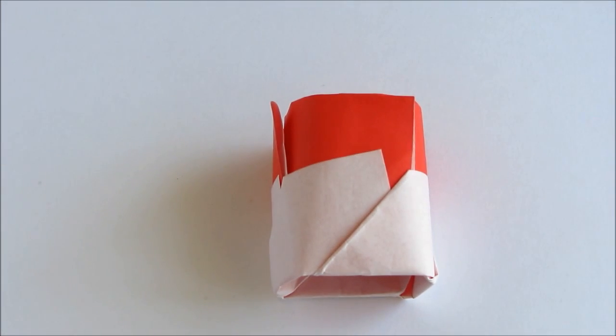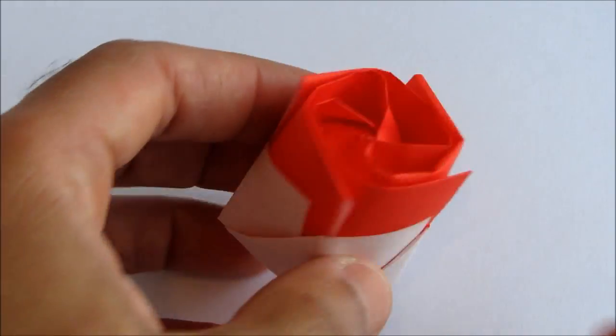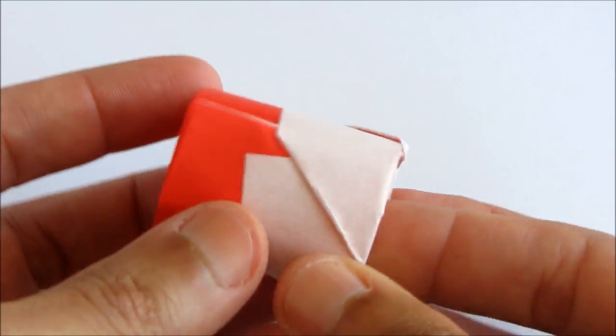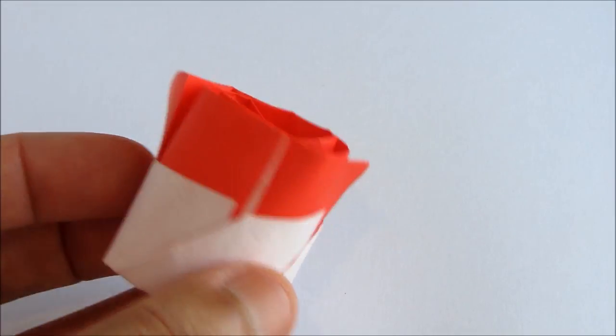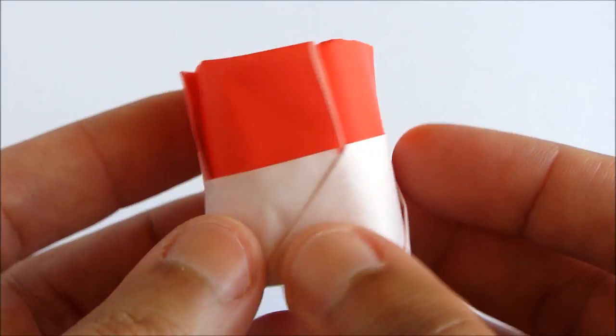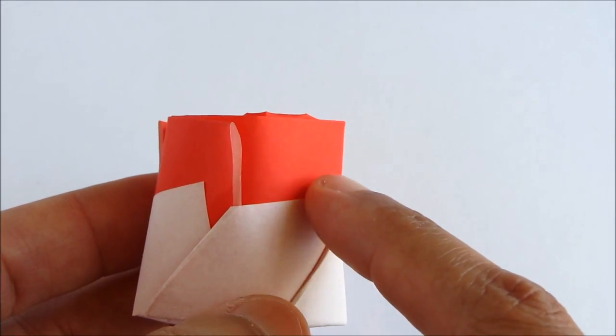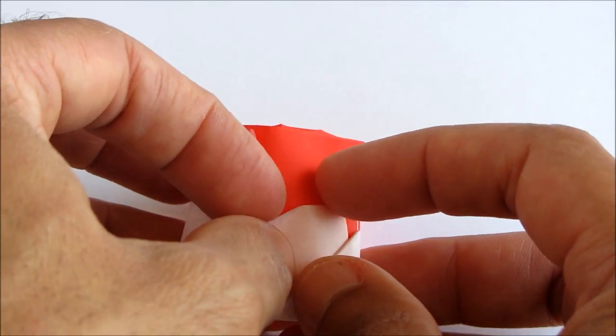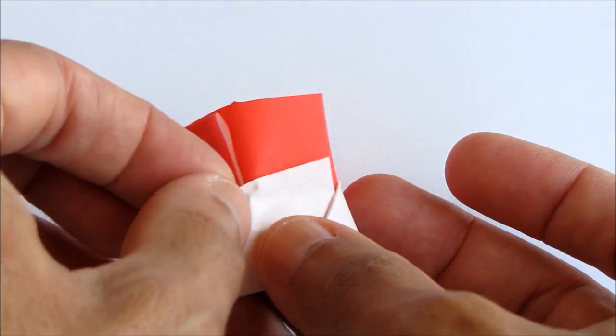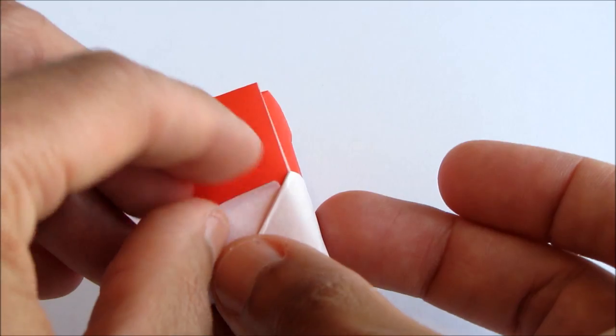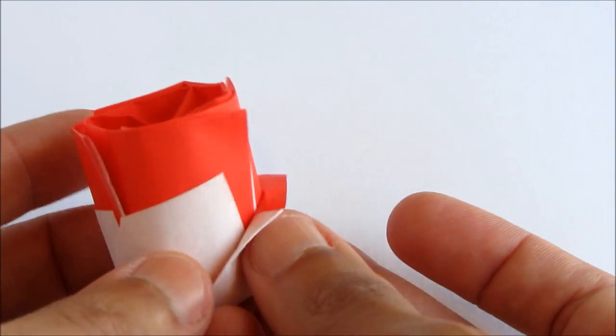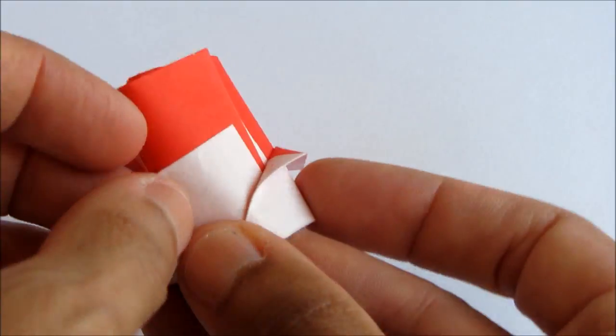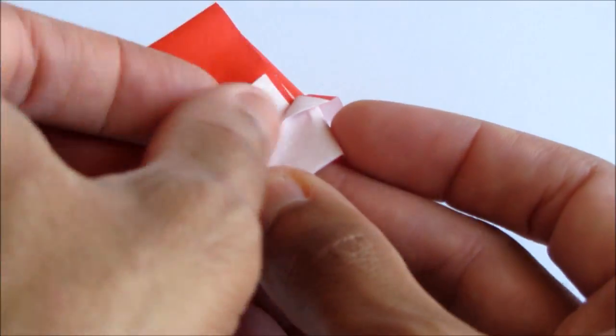Now what we're going to do is curl the petals. So we'll start with the lower row of petals. Curl this guy down like this. Take your time here. You don't want to rip the paper. And move on to its neighbor. And keep going until you've done all four of the lower petals.